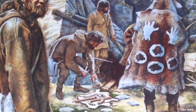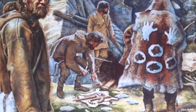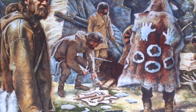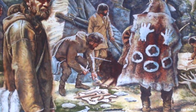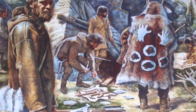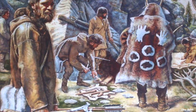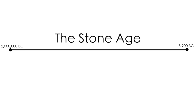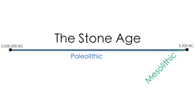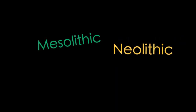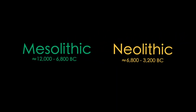But the technology of this period also included other important mediums like bone, leather, and other organic materials. The Stone Age is broken up into three parts: the Paleolithic, the Mesolithic, and the Neolithic. Today I will be talking about the Mesolithic and the Neolithic.